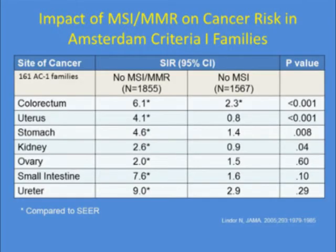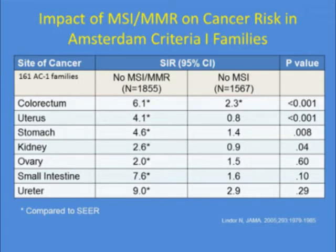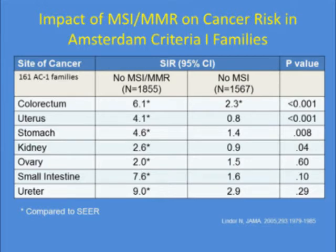A large study looked at individuals meeting Amsterdam Criteria 1 and stratified them by evidence of mismatch repair deficiency versus those without. Colorectal cancer risk was much higher in pedigrees with mismatch repair deficiency, and they also had substantially increased risk of extracolonic cancers. Those without mismatch repair deficiency had increased colon cancer risk compared to the SEER database, but not as high, and no extracolonic cancer risk requiring screening.